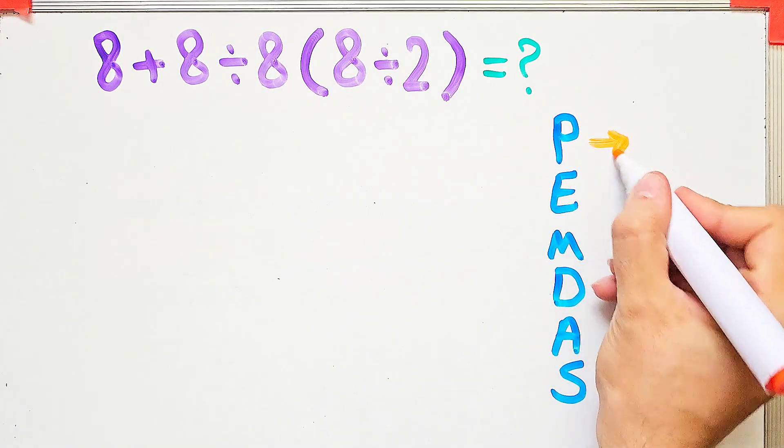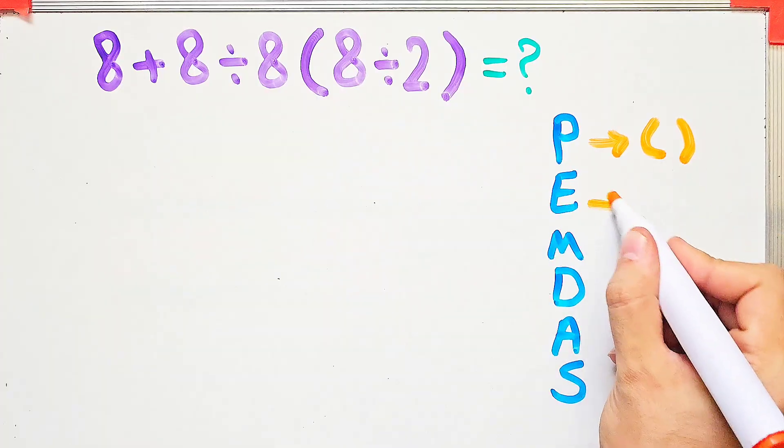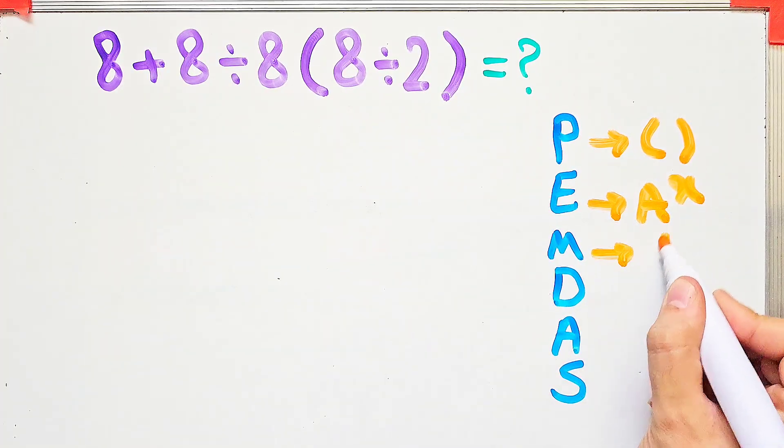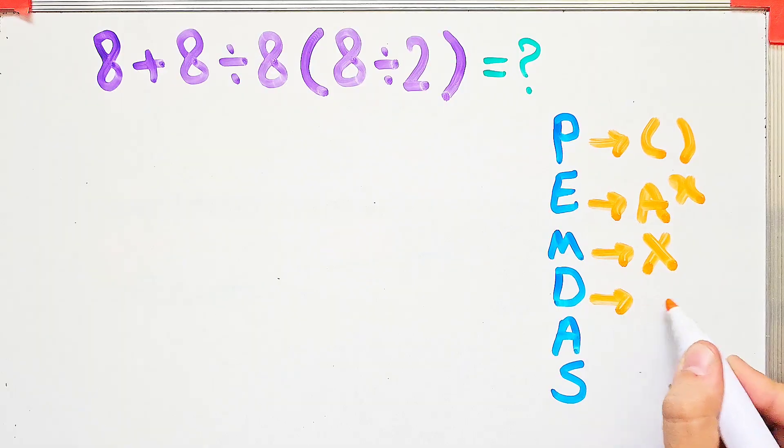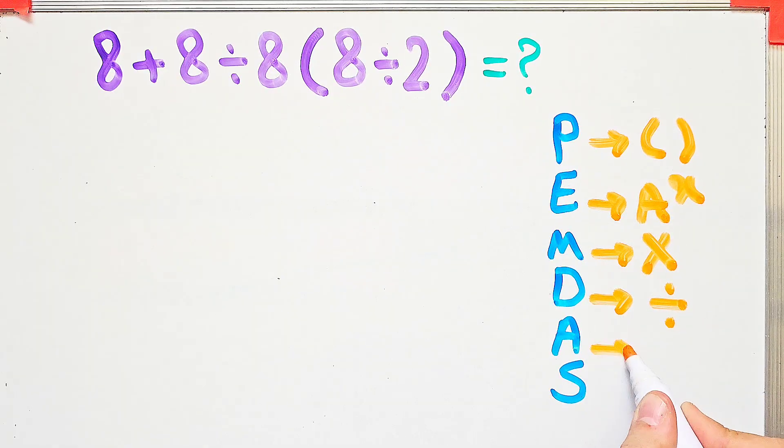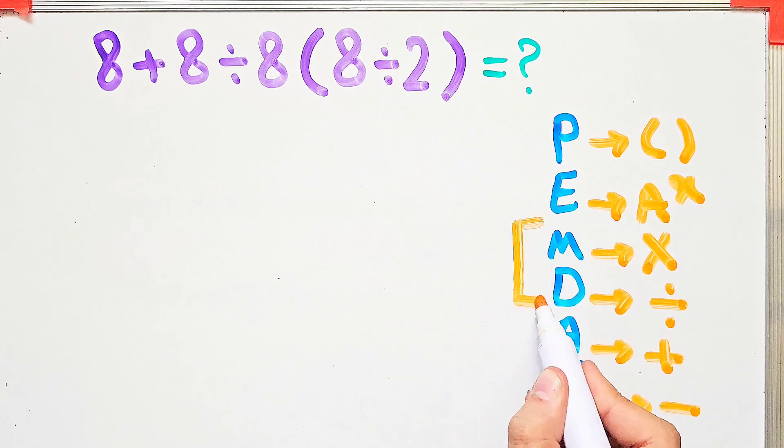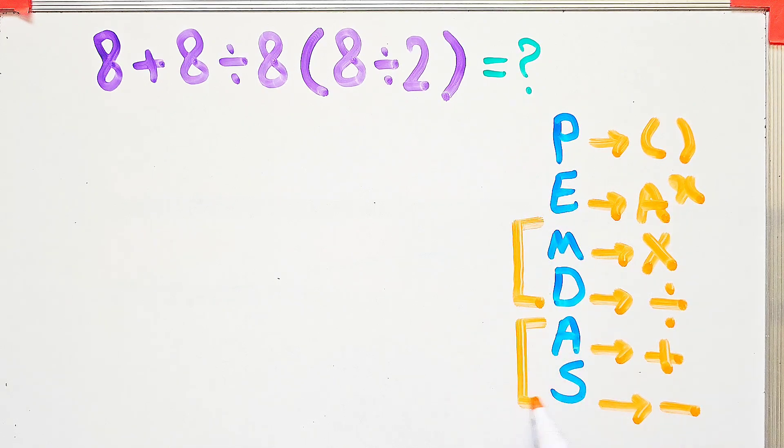In this rule, P stands for parentheses, E stands for exponent, M stands for multiplication, D stands for division, A stands for addition, and S stands for subtraction. Multiplication and division have the same level of priority, also addition and subtraction have the same priority.